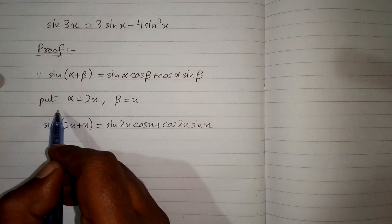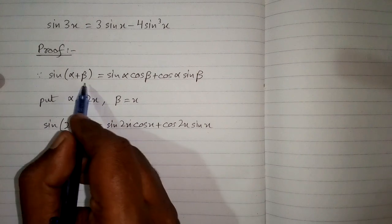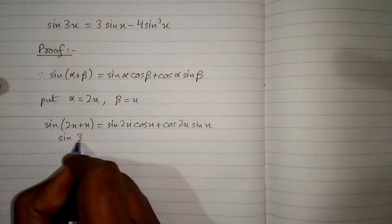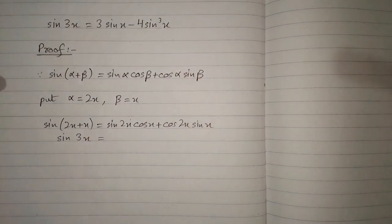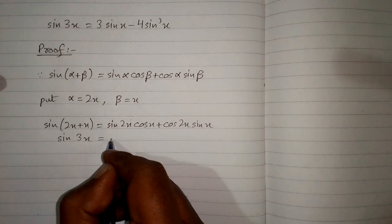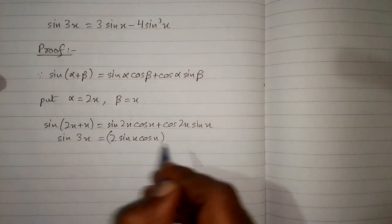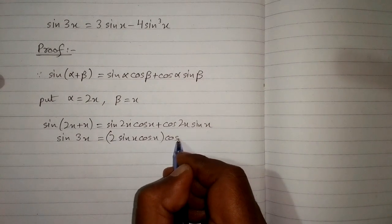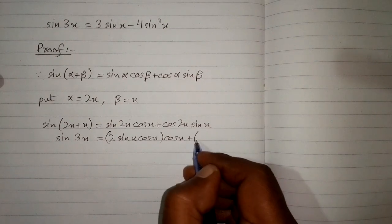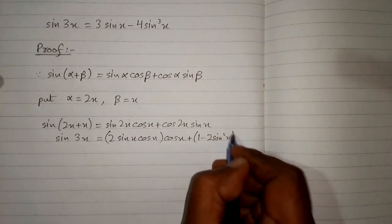So we put 2x in place of alpha and x in place of beta in this formula. We know that sine 2x is equal to 2 sine x cos x, and cos 2x is equal to 1 minus 2 sine square x.